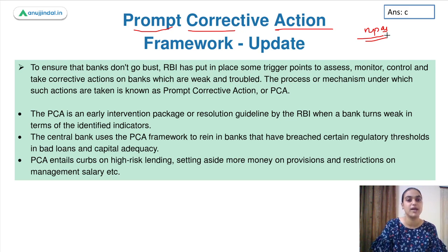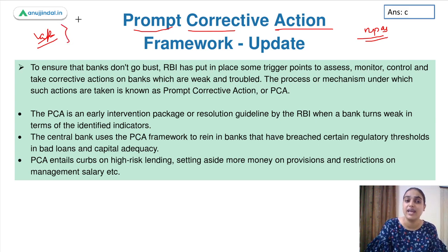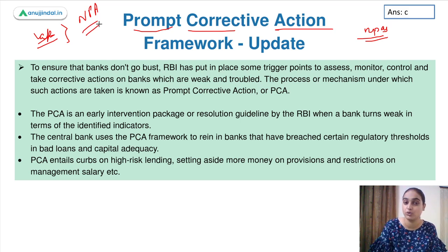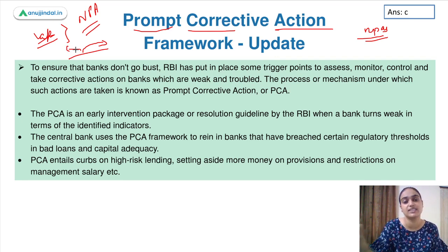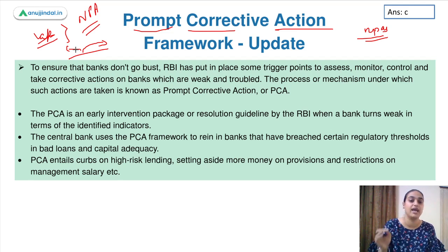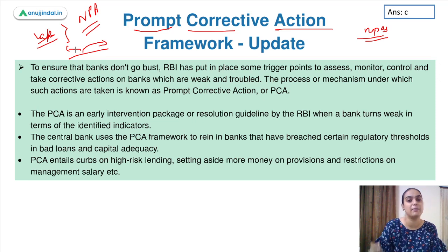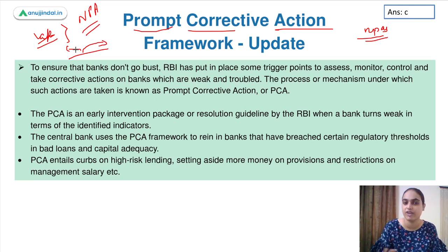RBI has decided different parameters — banks must maintain certain capital adequacy ratios and net NPAs should not exceed specified limits. There are 3-4 indicators RBI uses to assess bank performance. If risk thresholds are breached, banks are put into the PCA framework. RBI then imposes restrictions such as caps on management salaries, curbs on high-risk lending, and requirements to set aside more provisions on capital. Through this framework, RBI monitors and assesses bank performance and imposes restrictions when deterioration is observed.